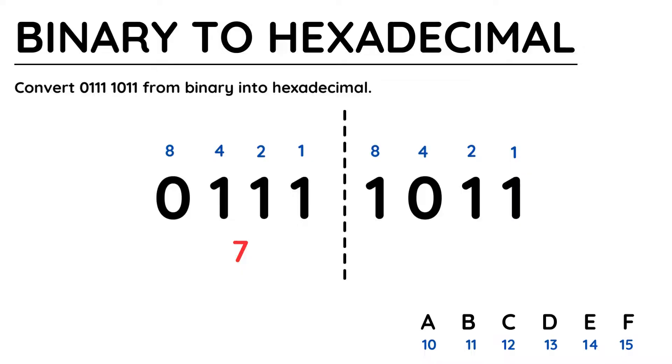Working out the value of the characters is quite straightforward, you just add together the numbers if there's a 1 beneath it. So the first character on the left is 7, because we add 4, we add 2, and we add 1.